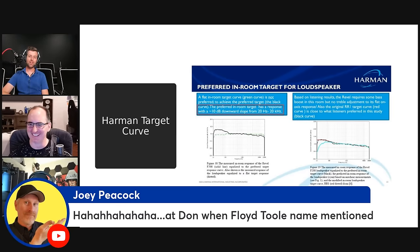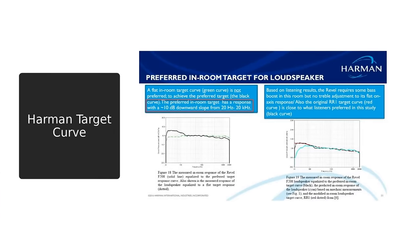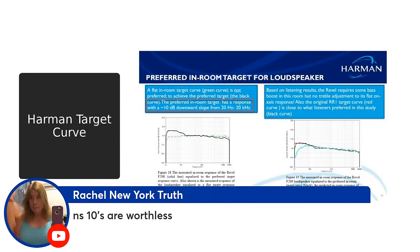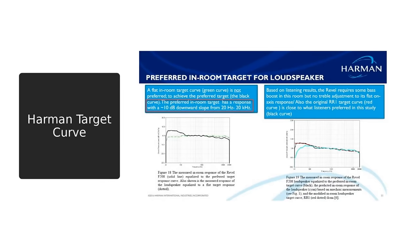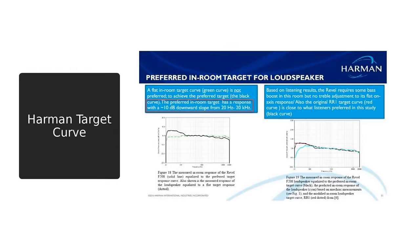Now we get into the Harman target curve. Part of the motivation for this presentation was that the term 'Harman target curve' feels like the wrong description — they weren't trying to set a target everybody's supposed to follow. What they were trying to do is better understand the preferred in-room response of a loudspeaker. You can see the elevated bass and slightly reduced treble in the measured curves — that very closely mimics what we call the Harman target curve.